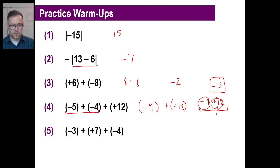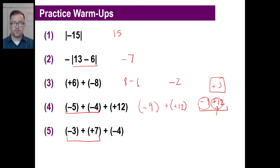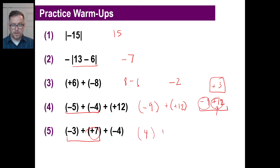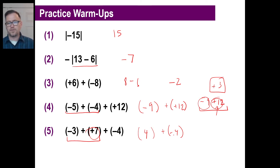Last one: let's go left to right. Negative 3 plus positive 7, opposite signs — immediately you go 7 minus 3, which is 4. Positive 7 is farther from 0, so this is positive 4. Now we have 4 plus negative 4. We have opposite-signed numbers, so we subtract the absolute values. 4 minus 4 is 0. That's all you need to do. Done.